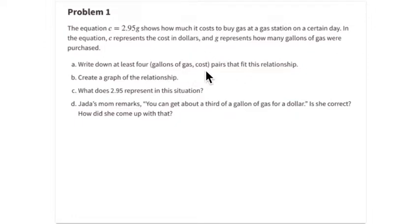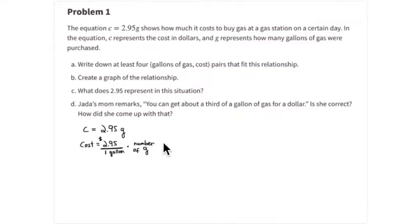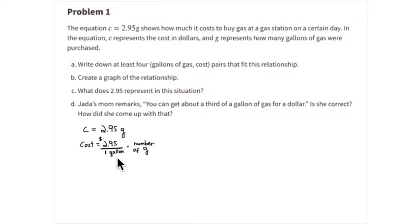You also need to create a graph of the relationship, identify what the two dollars and ninety-five cents represents, and respond to Jada's mom's remark about the gas. The equation is: cost equals two dollars and ninety-five cents per gallon. If you write the constant of proportionality as the unit rate, it's two and ninety-five hundredths per one gallon.